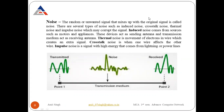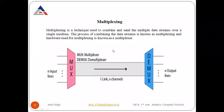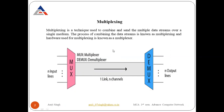This concludes signals, bandwidth, and transmission impairments. The next topic is multiplexing. Multiplexing is a technique used to combine and send multiple data streams over a single medium. The process of combining the data streams is known as multiplexing, and the hardware used for multiplexing is known as a multiplexer. When multiple senders want to send data over a single transmission medium, a multiplexer merges all the signals into a single unit and sends them using the same link.